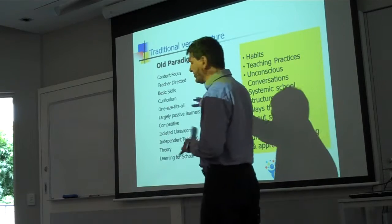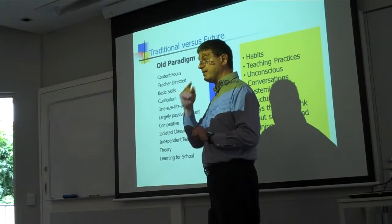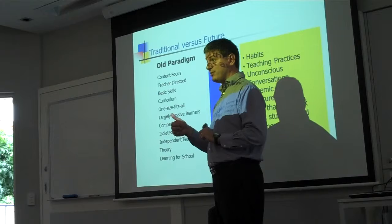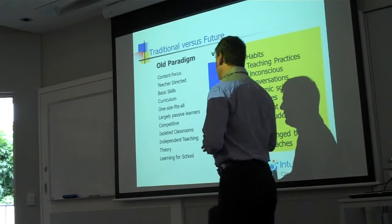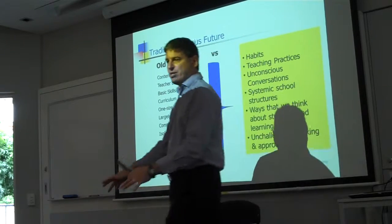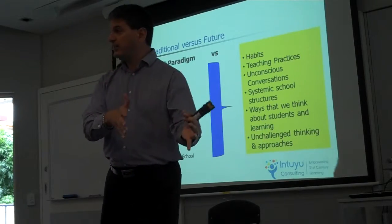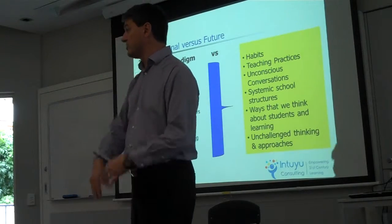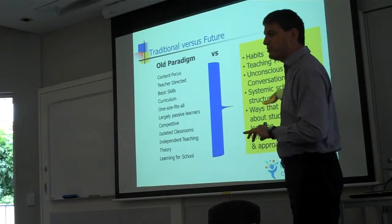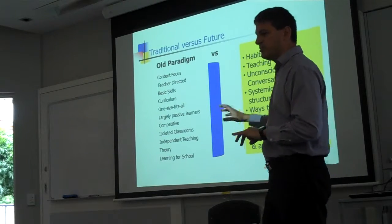We actually have a range of unconscious habits and structures in the way that we think about things. Things like there is a curriculum and we have to focus on teaching content. The discussion we're having in English today is really about what's most important — the achievement standards, the end goal. Teaching to the middle of the class. We spend a lot of time with those who are less competent, but we rarely challenge the more highly competent students. That's a function of the paradigm we've been operating in — the systemic structures, the unconscious conversations, the unchallenged thinking and approaches.